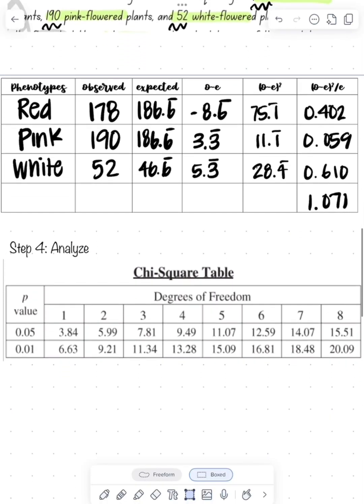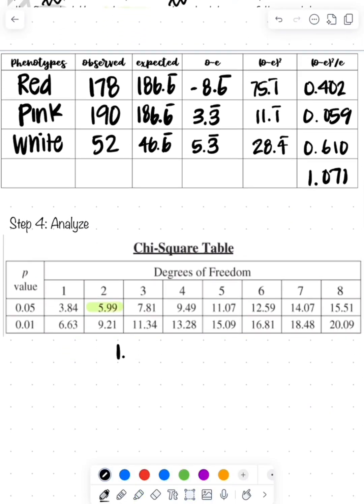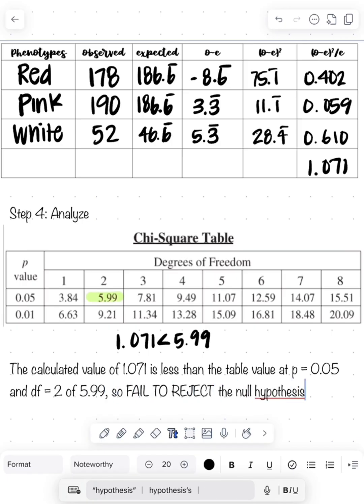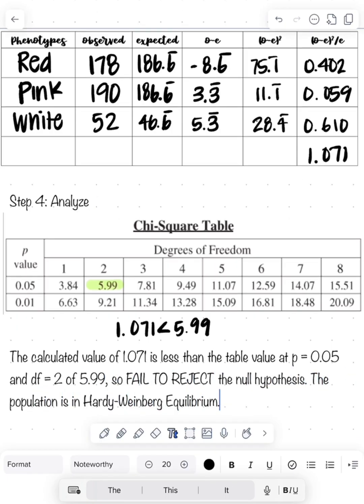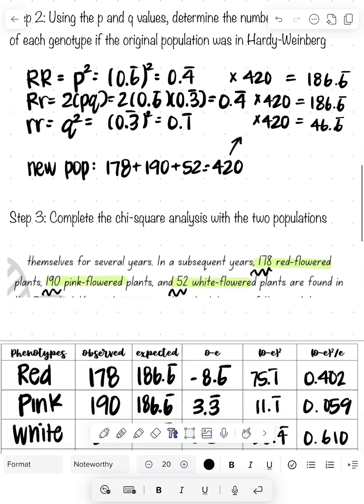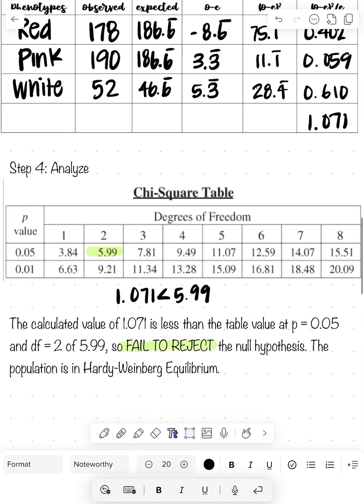Our fourth step is that we need to compare this to our table value. We are looking at a degree of freedom of 2 because we have three different phenotypes, so 3 minus 1 is 2. We have a p-value of 0.05. Our value is less than the table value, so that means we're going to fail to reject the null hypothesis. So it is in Hardy-Weinberg.